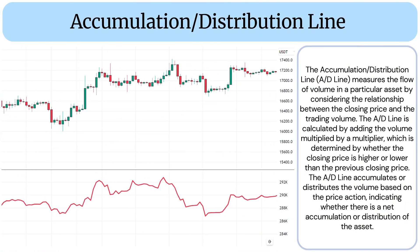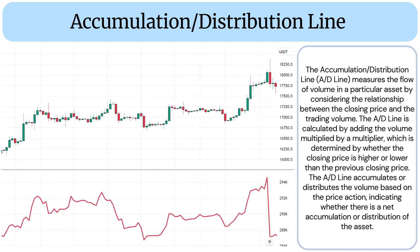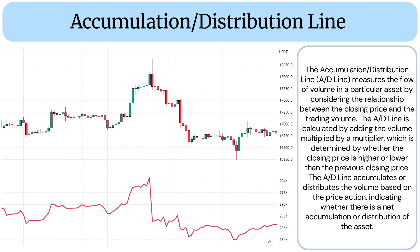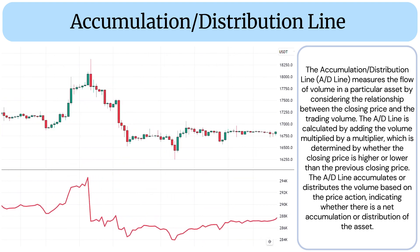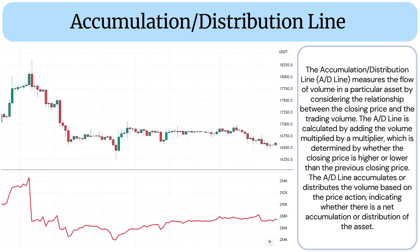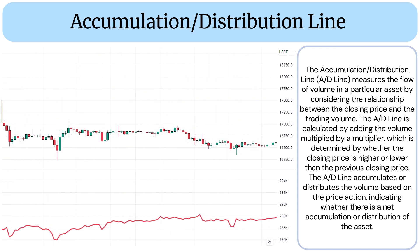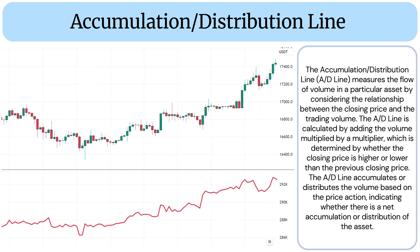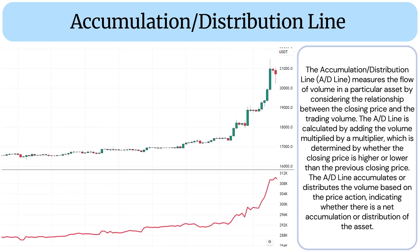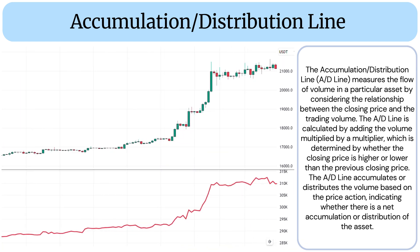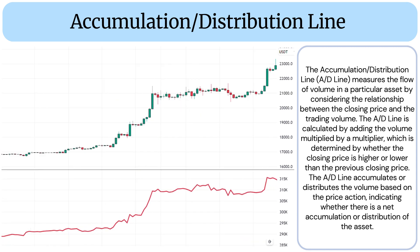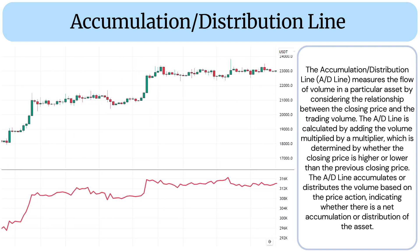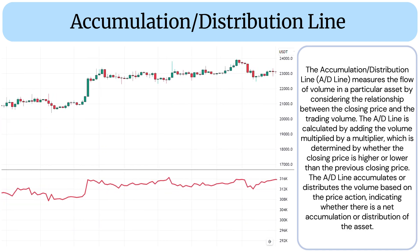The Accumulation Distribution Line measures the flow of volume in a particular asset by considering the relationship between the closing price and the trading volume. The AD line is calculated by adding the volume multiplied by a multiplier, which is determined by whether the closing price is higher or lower than the previous closing price. The AD line accumulates or distributes the volume based on the price action, indicating whether there is a net accumulation or distribution of the asset.